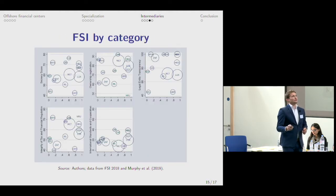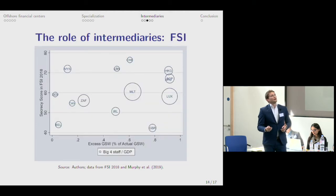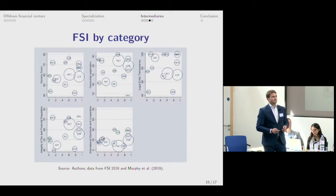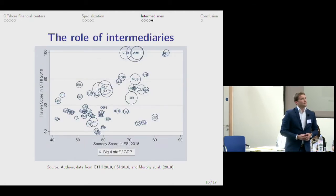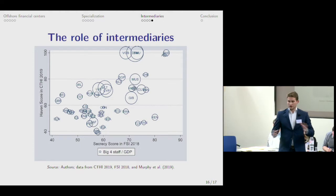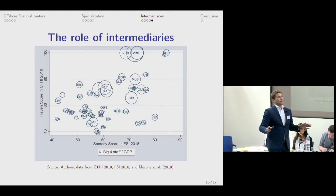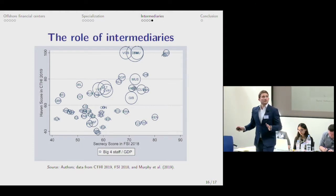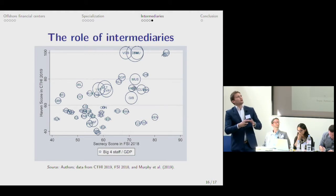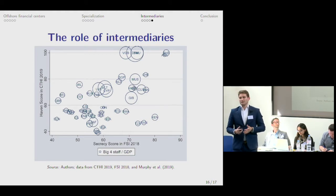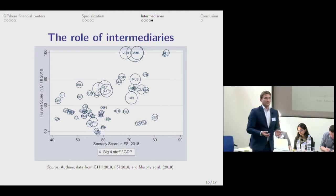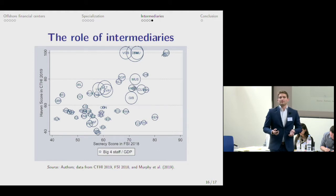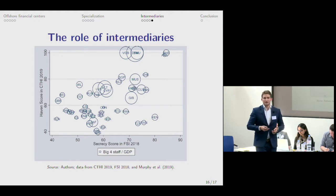I'm going to skip the same results for the FSI — they are not as persuasive as for the CTHI. But I'll show a graph with the haven score and the secrecy score on the two axes, setting aside the excess global scale weight entirely. This shows that if the jurisdiction allows things to happen on the qualitative side, the Big Four is there.